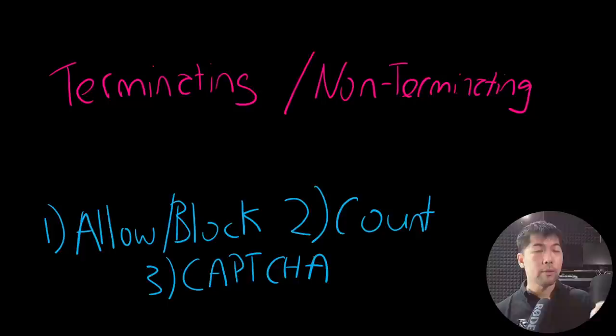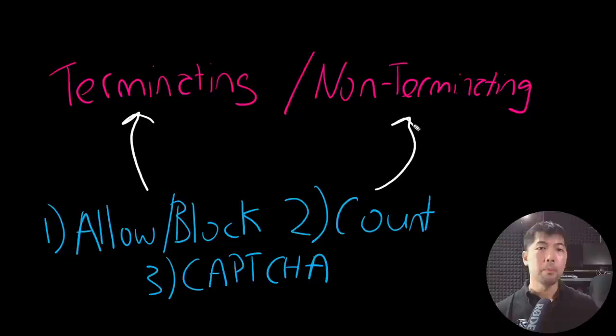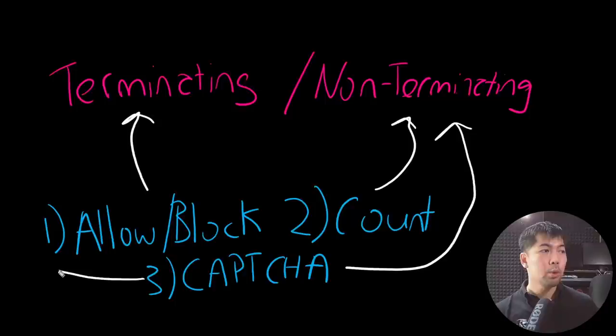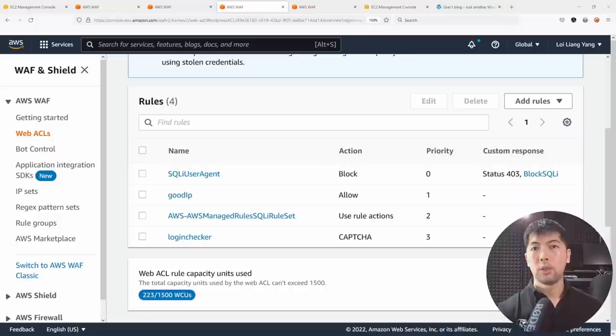There are several action options when a rule matches: 'allow' and 'block' are terminating rules — the moment the action is taken, evaluation stops and no subsequent rules are checked. 'Count' is non-terminating — it records a match for later analysis without stopping rule evaluation. 'Capture' can be both non-terminating and terminating — passing a capture check doesn't mean no further rules are evaluated; subsequent rules will still be checked against the request.